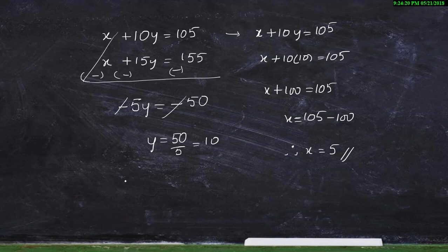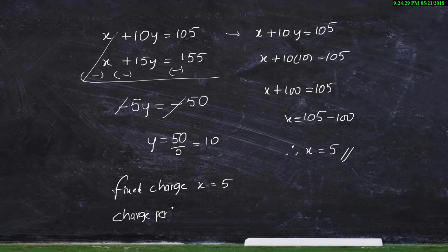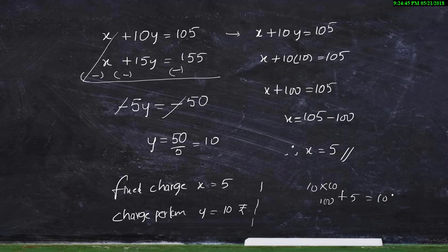We got the fixed charge x equals ₹5 and the charge per kilometer y equals ₹10. Now let's verify our answers: for 10 kilometers it is 10 into 10 equals 100, plus fixed charge 5 equals ₹105 — correct! For 15 kilometers it is 150 plus 5 equals ₹155 — yes, we got the correct answer.